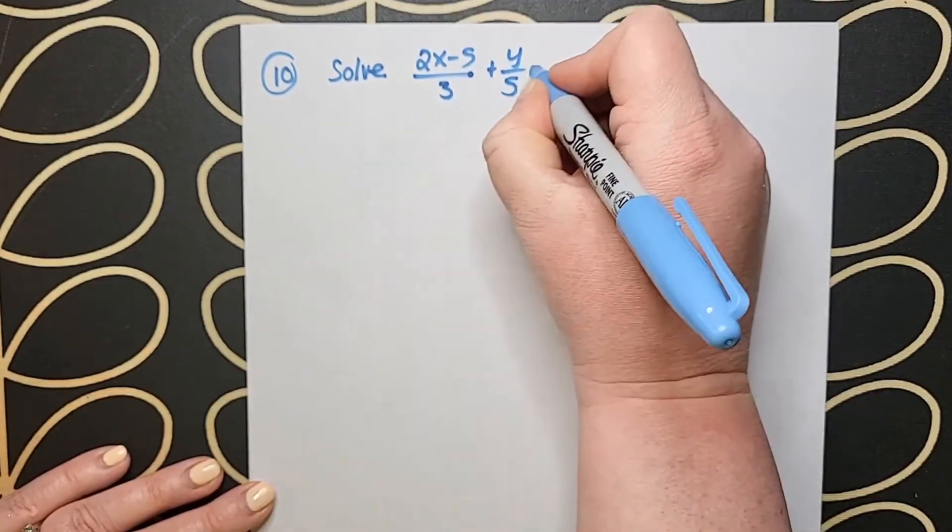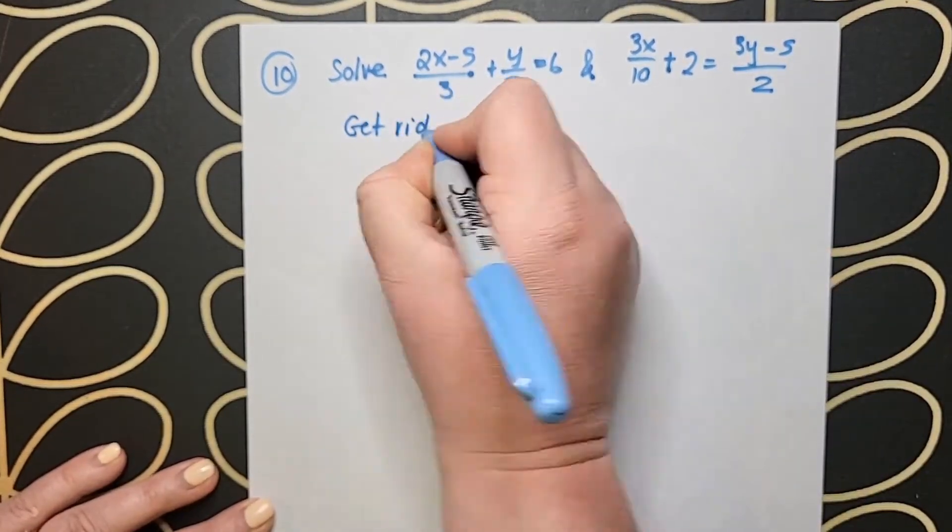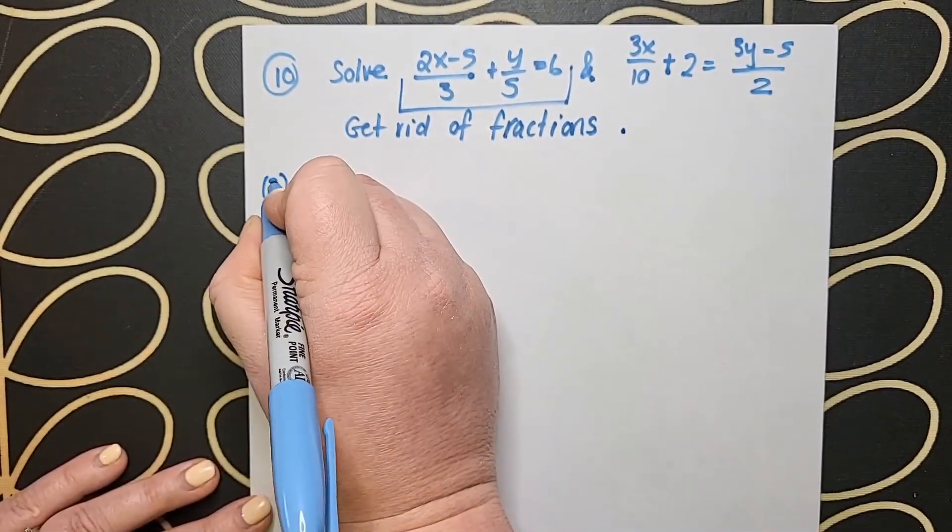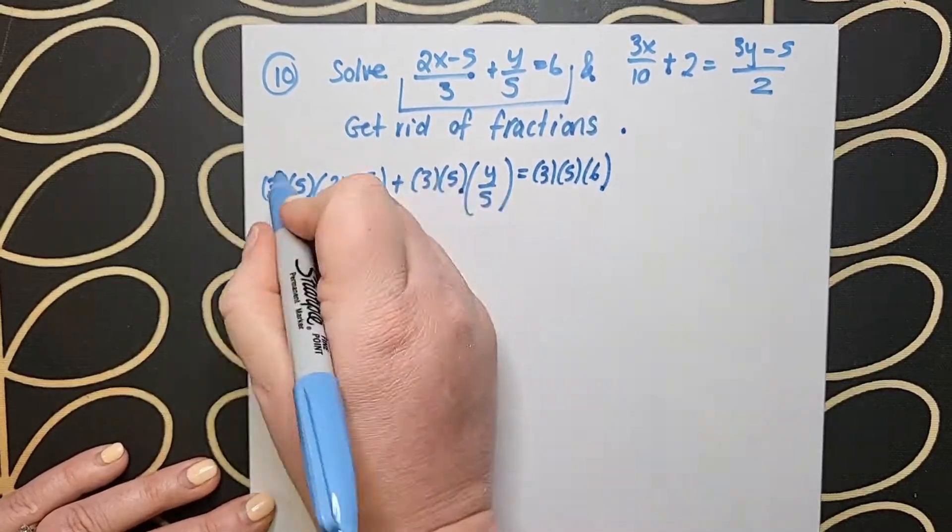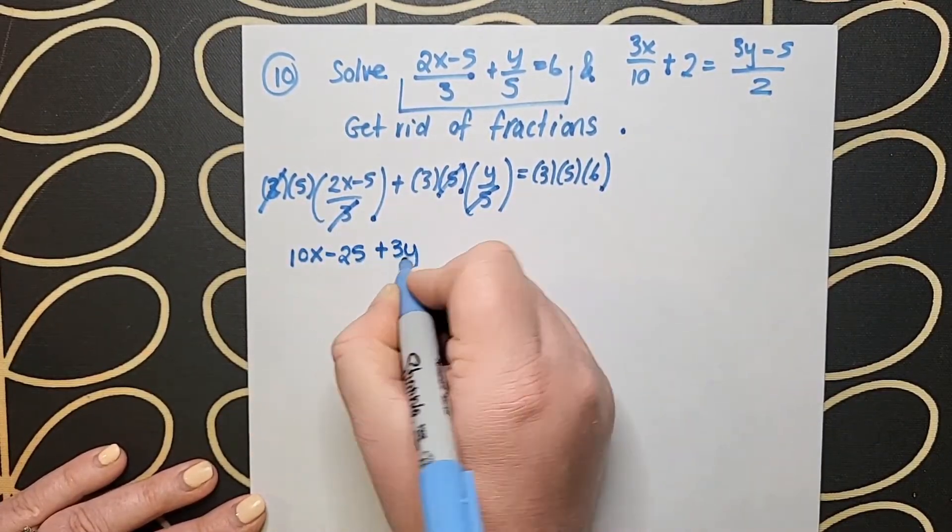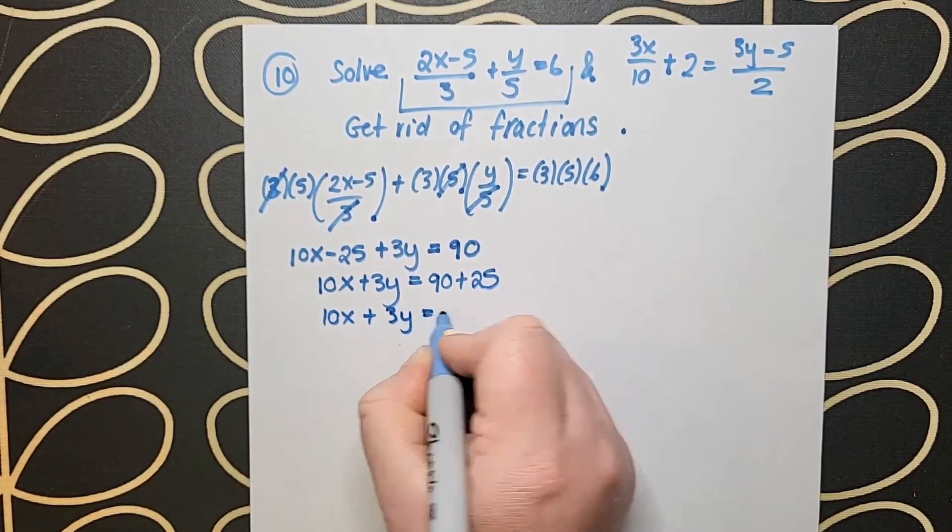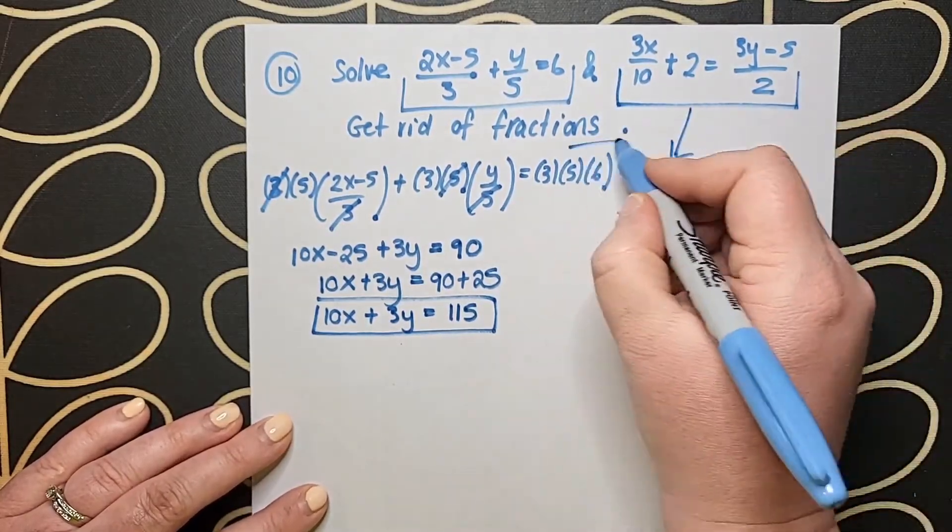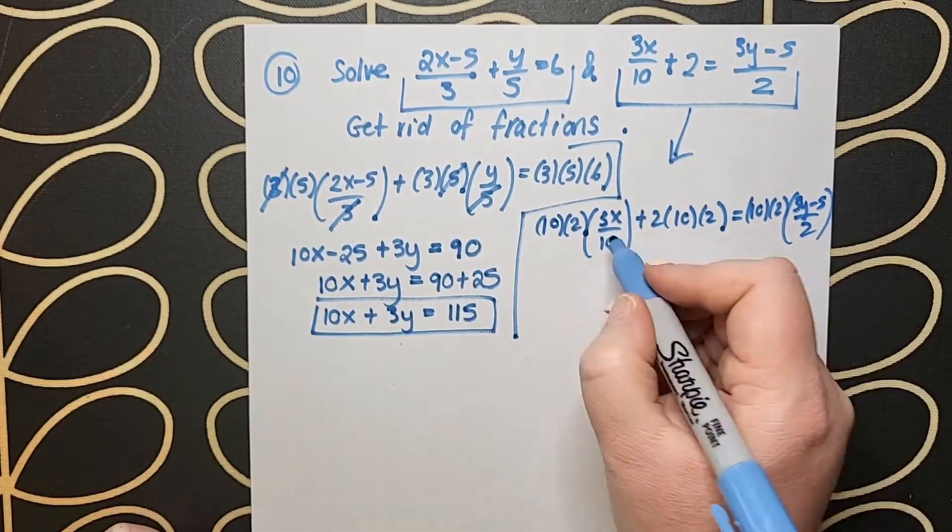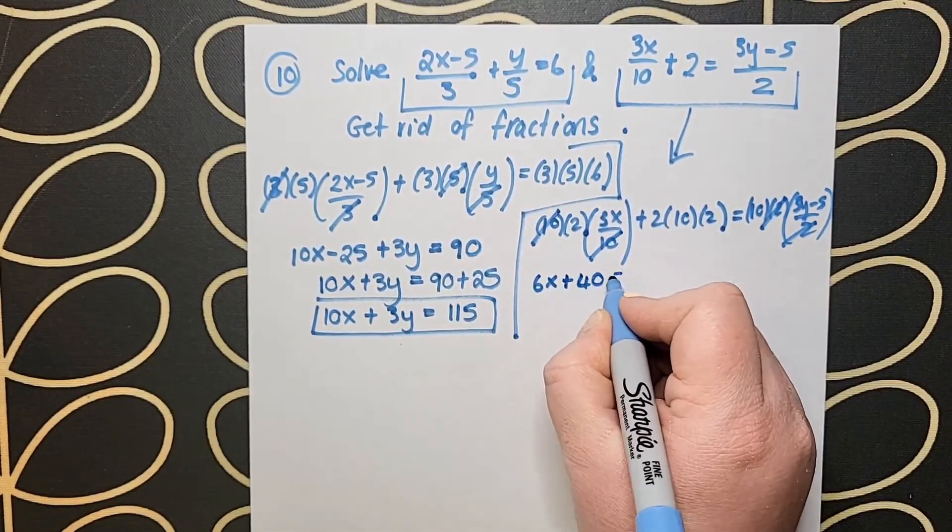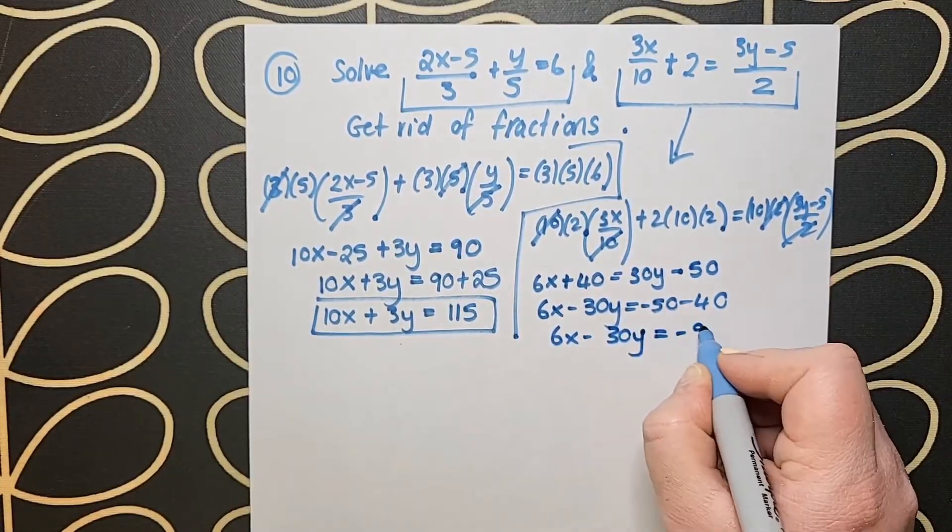This is a challenging one. Question 10 gives us two equations with fractions, so you're going to have to get rid of the fractions. For the equation on the left, I'm going to multiply across by 3 and 5 to eliminate those fractions, and I end up creating a linear equation of 10x plus 3y equals 115. On the right-hand side, I multiply across by 10 and 2 to get rid of those fractions, and I end up with 6x minus 30y equals minus 90. I bring those two equations together and go through my four steps of simultaneous equations like we've done in the last nine examples. The way they make these more difficult is by not having the equations in the correct form or having them as fractions. That's an extra layer of difficulty they can add on, but the four steps are set in stone and do not change when you've got two linear equations.